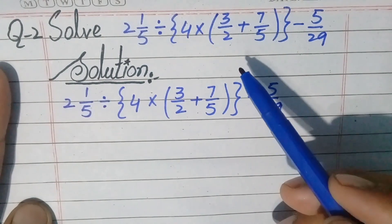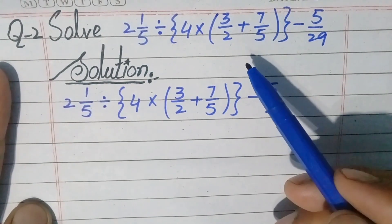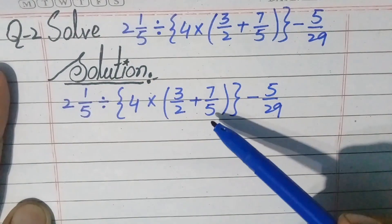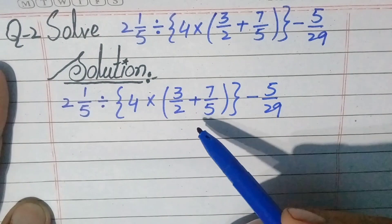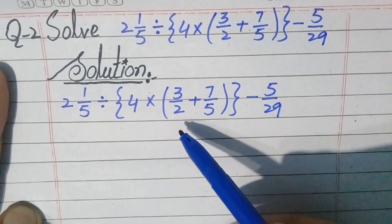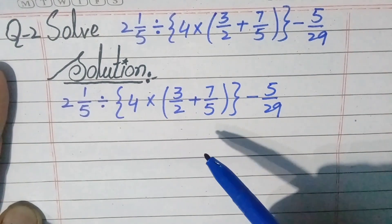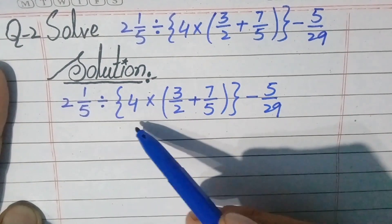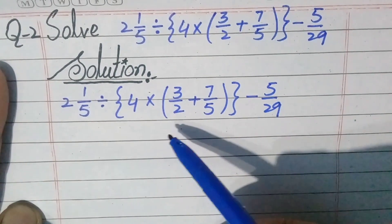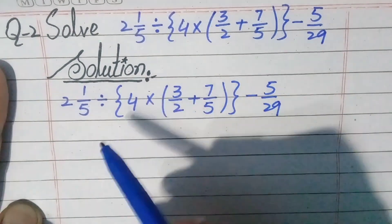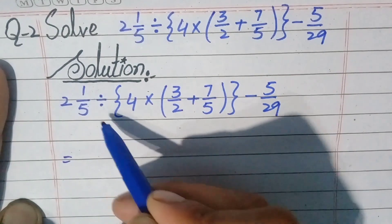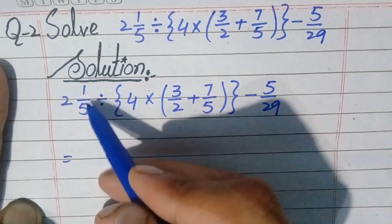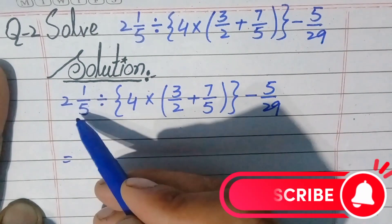Now my dears, I have another question on fractions — how we can apply BODMAS rule on fractions. Similarly, first we write the solution and write the question again. My dears, you can see there are many operations, so we use BODMAS rule to simplify. According to BODMAS, first we simplify brackets — there are two types: parentheses and braces. So first we will solve both brackets.